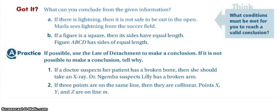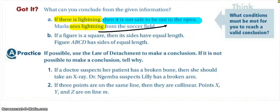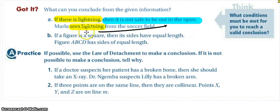Make sure you've worked through the other problems and then come back for the answer. Our statement here is that if there is lightning, then it is not safe to be out in the open. Marla sees lightning, so since the hypothesis happened, the conclusion has to happen — she can conclude that it is not safe to be out in the open.